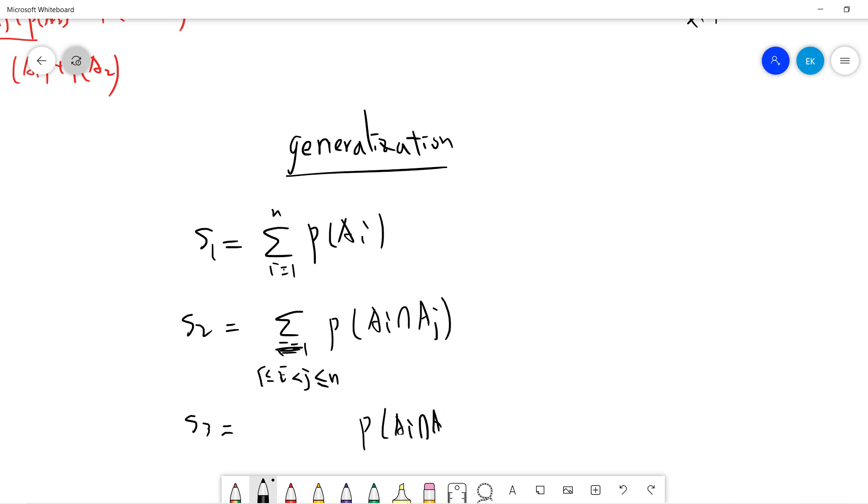S2 is P(Ai intersection Aj) such that j is not equal to i. And you can define S3 as P(Ai intersection Aj intersection Ak), so i, j, and k should all be different. You can get S1, S2, S3, and Sn, so you get some positive numbers.